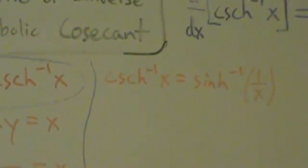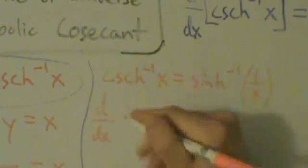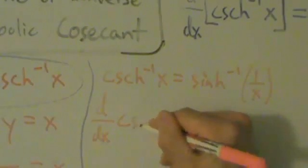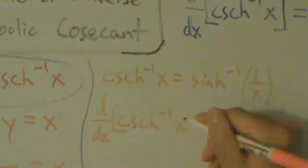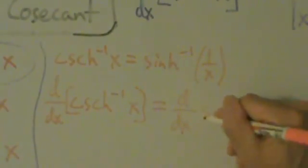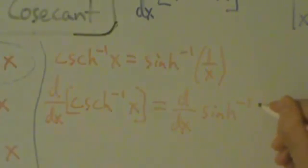If we want the derivative of inverse hyperbolic cosecant of x, we just take the derivative of inverse hyperbolic sine of 1/x, and we're going to apply the chain rule just like in the last couple of videos. So d/dx of inverse hyperbolic cosecant of x equals d/dx of inverse hyperbolic sine of 1/x. Now we apply the chain rule: take the derivative of the big function, evaluate it at the little function, and multiply by the derivative of the little function.